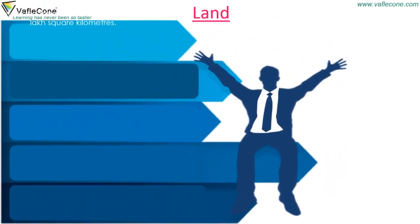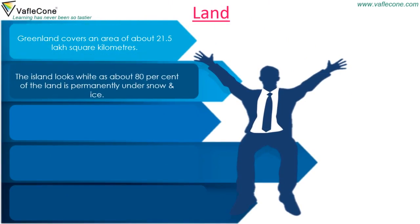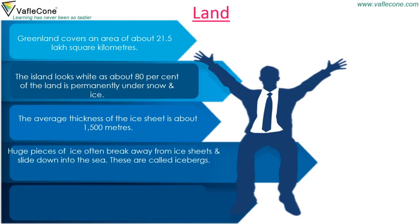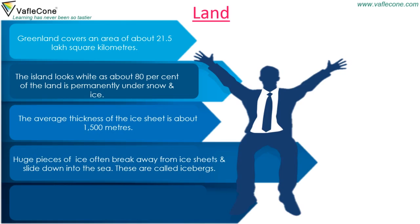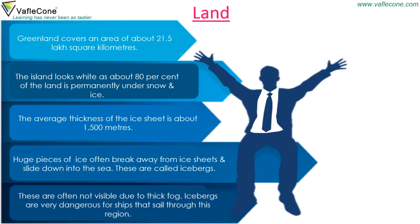Land. Greenland covers an area of about 21.5 lakh square kilometers. The island looks white as about 80% of the land is permanently under snow and ice. The average thickness of the ice sheet is about 1500 meters. Huge pieces of ice often break away from ice sheets and slide down into the sea. These are called icebergs. They are often not visible due to thick fog and are very dangerous for ships that sail through this region.